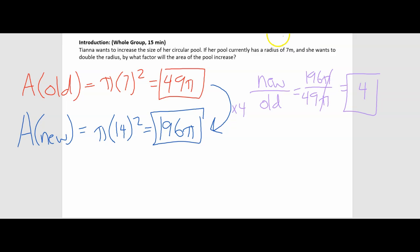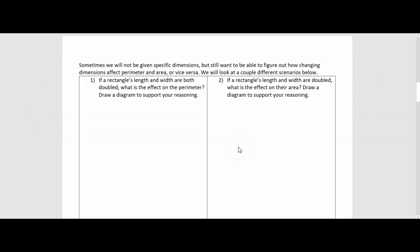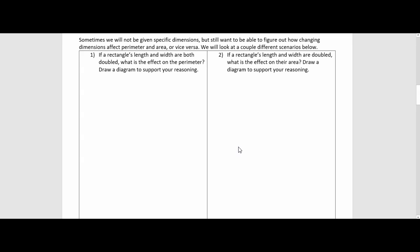Let's move on. Sometimes we will not be given specific dimensions but still want to be able to figure out how changing dimensions affects perimeter and area, or vice versa. Let's look at number one. It says: if a rectangle's length and width are both doubled, what is the effect on the perimeter? Draw a diagram to support your reasoning.